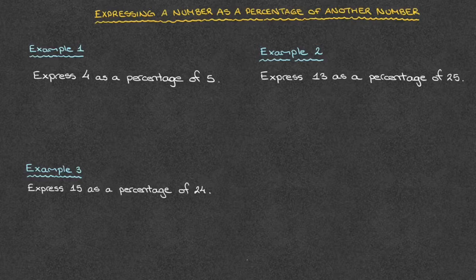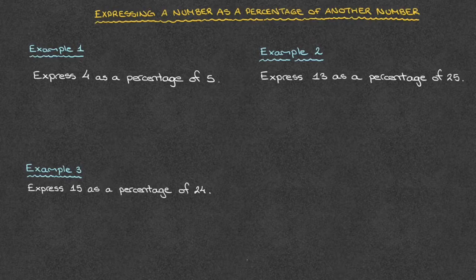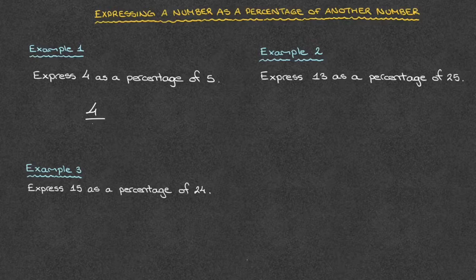So let's go ahead. The first thing we're asked to do is to express 4 as a percentage of 5. And to do that, we divide 4 by 5, which we can write as a fraction as 4 over 5.